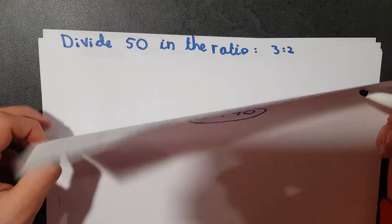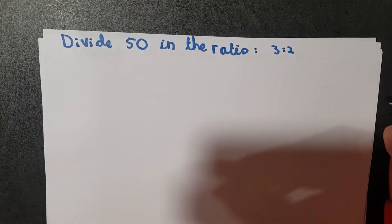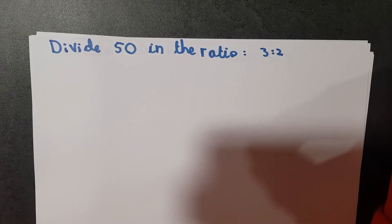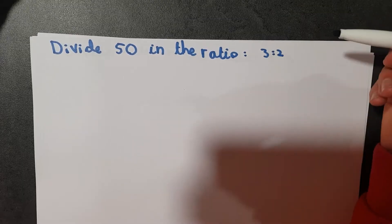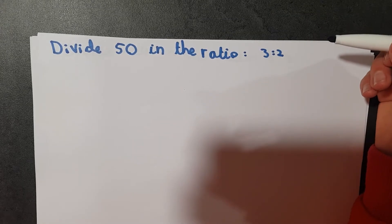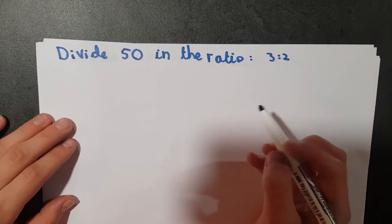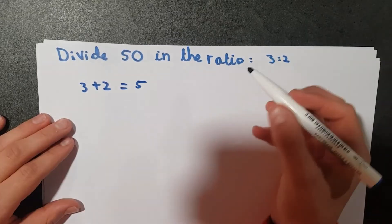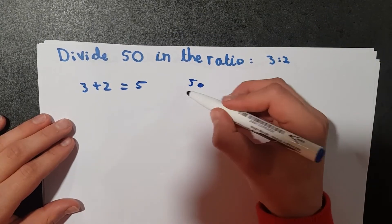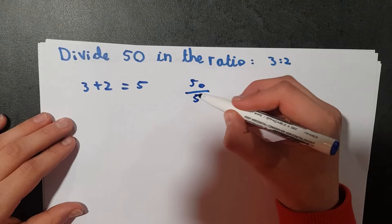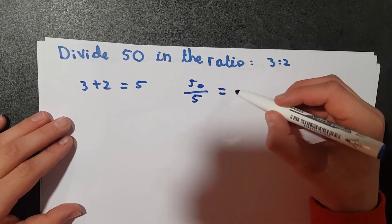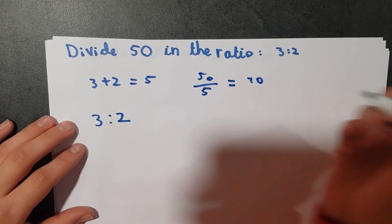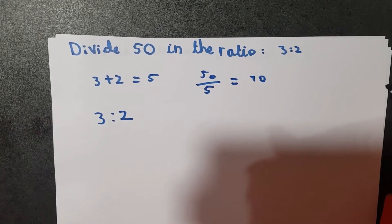have divide 50 in the ratio of 3 to 2. Now in this one, basically it's the same as last time. All you have to do is 3 plus 2, which is 5, divide 50 by 5, this is 10. Now we take the ratio once again, so 10 times 3, so this one is 30, and then now 10 times 2, which is 20.